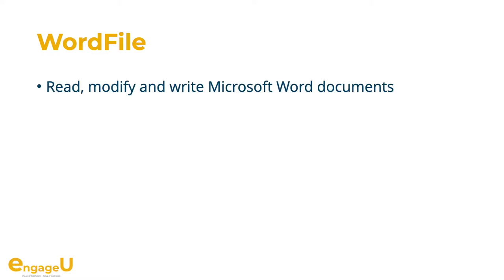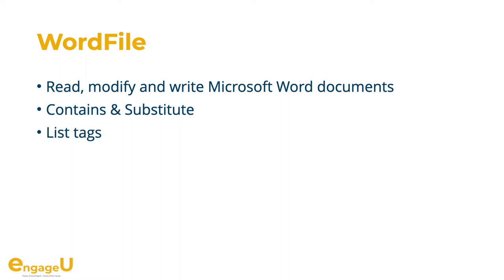We have Word file functions to read, modify and write Microsoft Word documents. For example, you can output Word files where you load a template file, replace tags with values and save to a new Word document. We added a contains function to check whether some text is in the document and a substitute function to replace it. You can also list the tags to replace if you use our tag system, and you can now save to a container instead of a file.